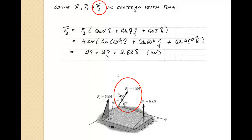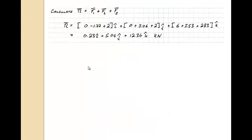The last force, F3, is given in Cartesian vector form using three direction cosines. We take the magnitude of 4 kilonewtons and find the cosines of the respective three angles, giving us F3 in Cartesian coordinates. Summing all components, the resultant force has a positive I component, a positive J component, and a positive K component.